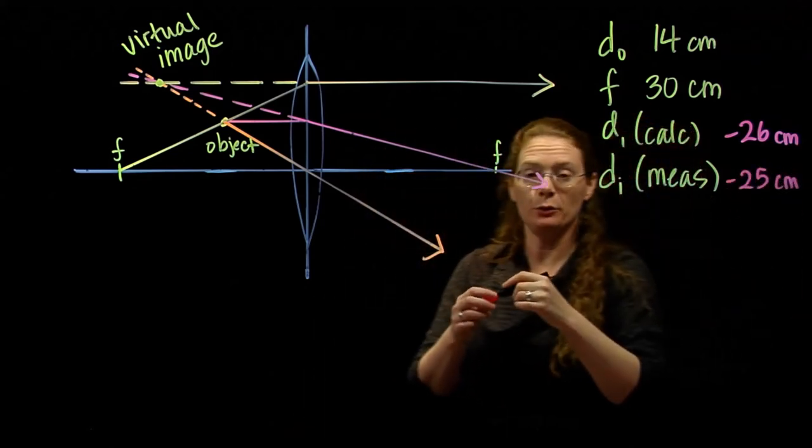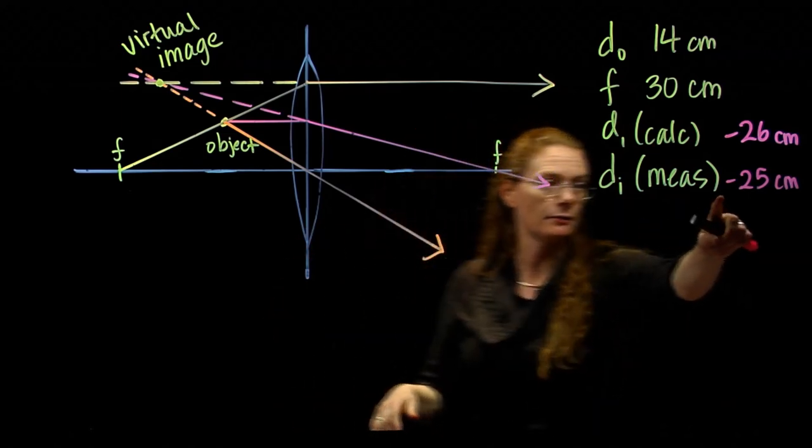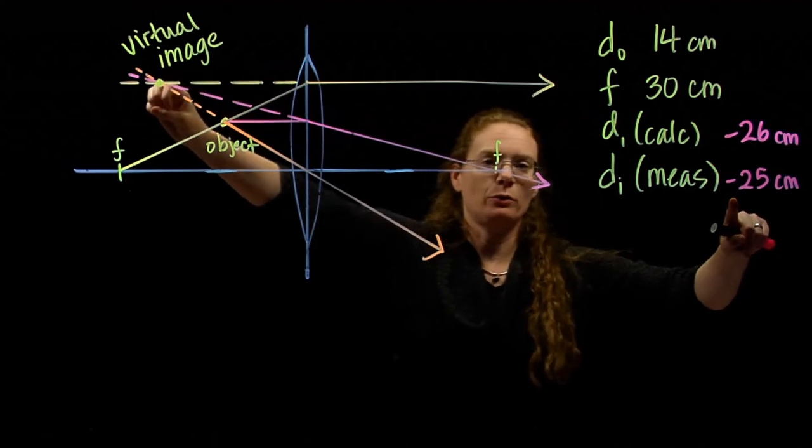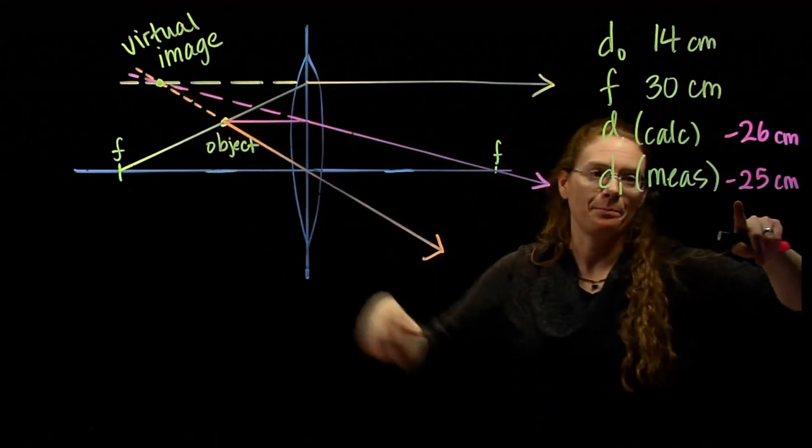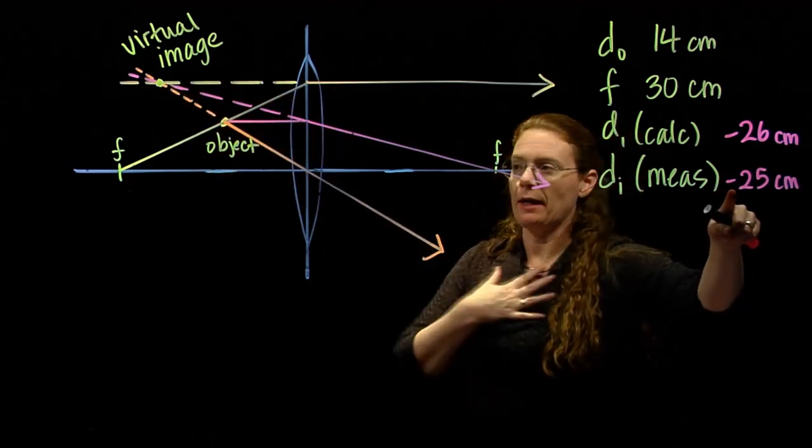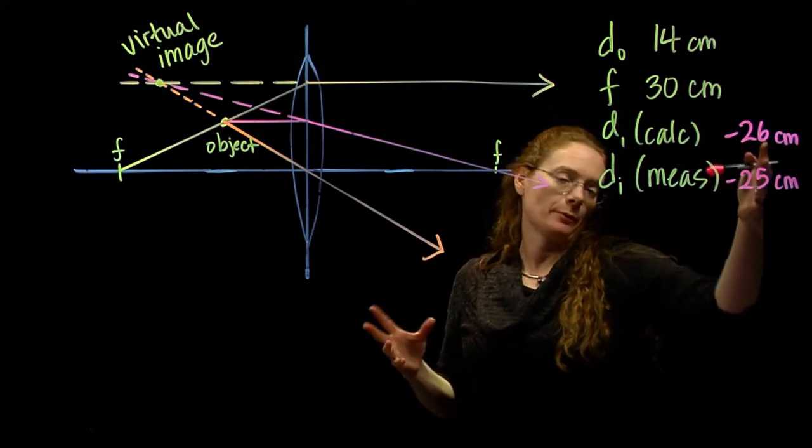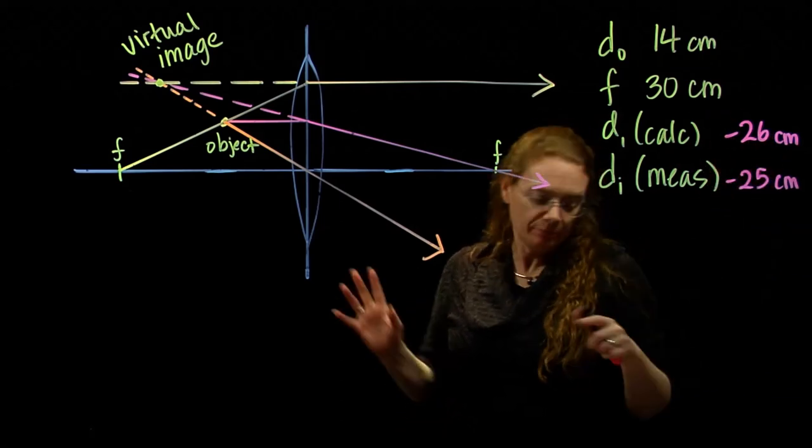And that negative, I have to include that myself. I have to put that negative there myself because I say, oh, virtual image, the light rays don't meet there. I had to backtrace them. So that is something that I put in based on knowing the physics. This negative comes out from the math. So they're about the same.